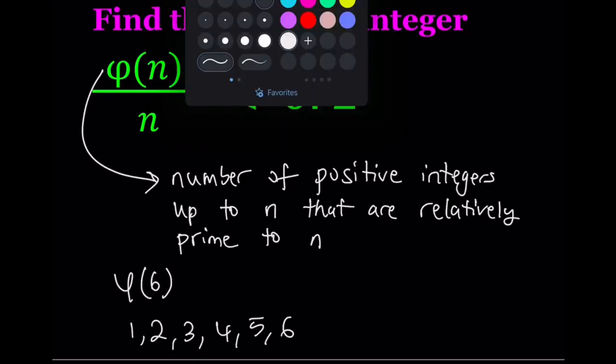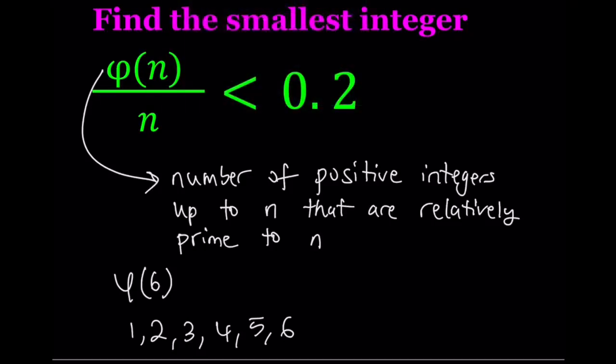For example, 1 and 6 are obviously relatively prime, so we count 1. But 2 and 6 are not relatively prime, so 2 doesn't count. 3 doesn't count. 4 doesn't count. But 5 does count. What about 6 and 6? It doesn't count because they share a common divisor of 6 itself. So there are only two numbers relatively prime to 6, and phi of 6 equals 2.